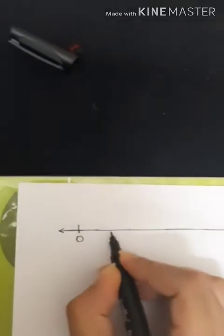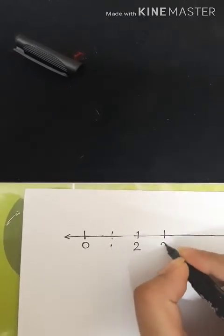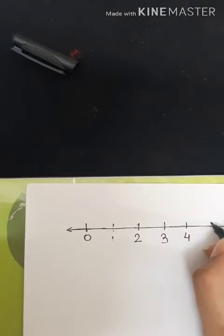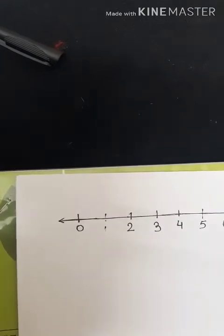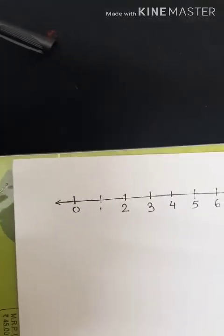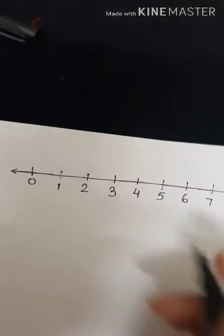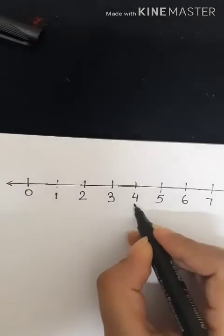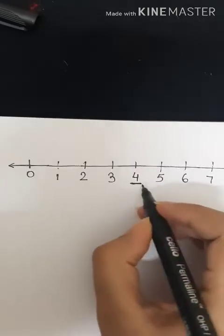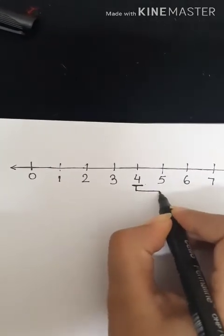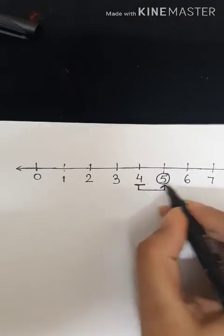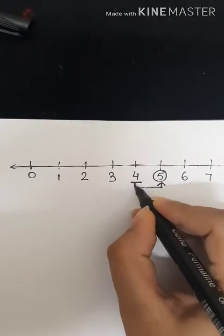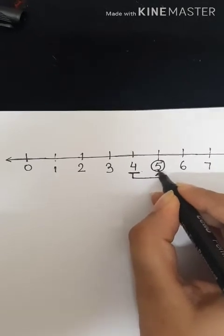Let us draw a number line. 0, 1, 2, 3, 4, 5, 6, 7, 8, 9, 10. Now children, let us choose any number, say number 4. So the number that comes after number 4 is number 5. After means baad mein. So the number that comes after 4 is number 5.